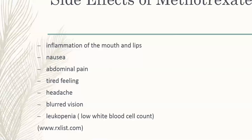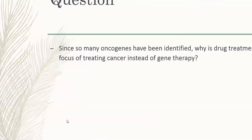Fast-dividing cells include epithelial cells, which line the inner walls of the mouth and intestine, and blood cells such as white blood cells, which divide to produce more white blood cells. If the process of DNA replication is inhibited, these cells will be affected. As these cells are unable to divide and repair themselves, this results in side effects such as inflammation of the lips, abdominal pain, and leukopenia, which is low white blood cell count.